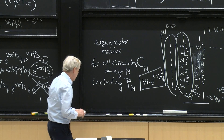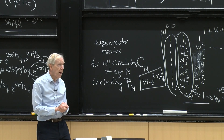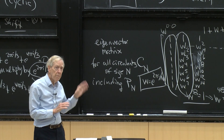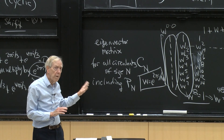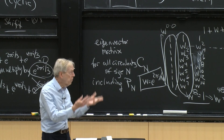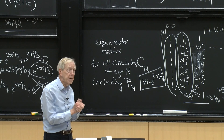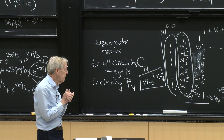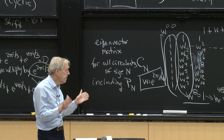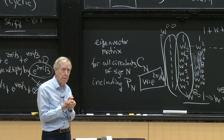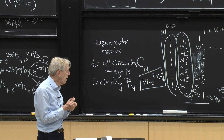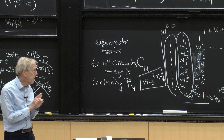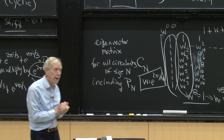OK, those are the beautiful pictures: the eigenvalues equally spaced on the unit circle, the eigenvectors being orthogonal, and the actual details of what those eigenvectors are. Hope you have a good weekend. We've just got a week and a half left of class. I may have one more thing to do about Fourier, and then we'll come back to other topics.